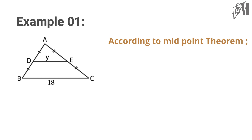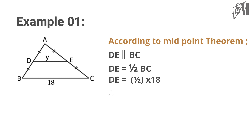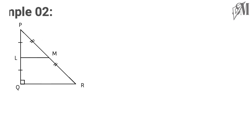And DE is equal to half of BC. Therefore DE is equal to half of 18 centimeters, and then y is equal to 9 centimeters. Let's turn to another example. PQR is a triangle. L and M are midpoints of PQ and PR.